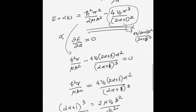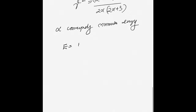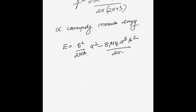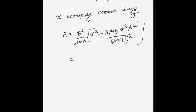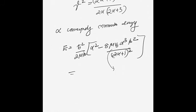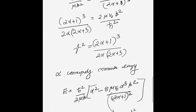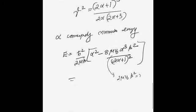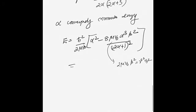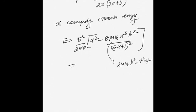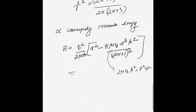With α determined by the minimization condition, we substitute back into the energy expression. The energy becomes E = ℏ²/(2μβ²) · α² − 8μV₀α³β²/(2α+1)². Then 2μV₀β² = γ²ℏ², which we substitute to further simplify.